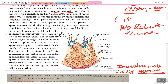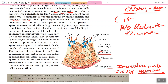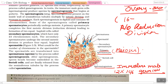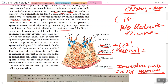Primary spermatocytes complete the first meiotic division (reduction division), leading to the formation of two equal haploid cells called secondary spermatocytes, which have only 23 chromosomes (half of 46). The secondary spermatocytes then undergo the second meiotic division, and the chromosome number again remains 23.